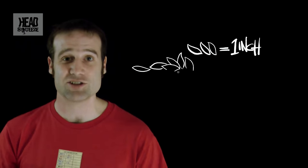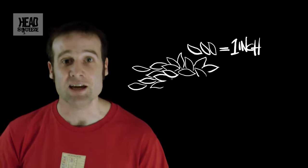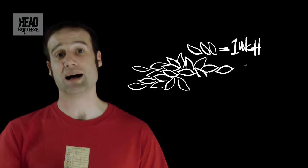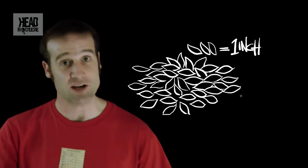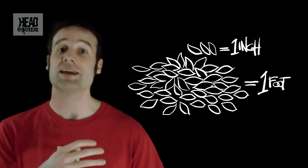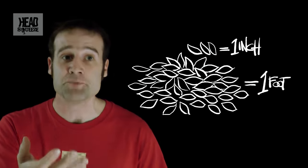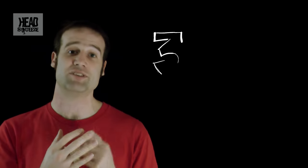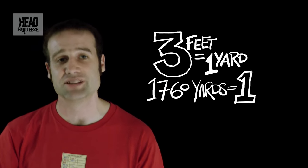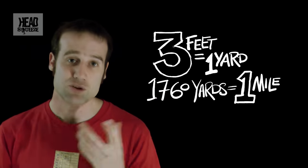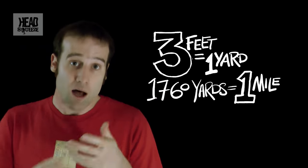Because it all hangs together so nicely: you take three Barleycorns, that gives you an inch. You then take 12 inches, that gives you a foot. You take three feet, it gives you a yard. You take 1760 yards, you get a mile.